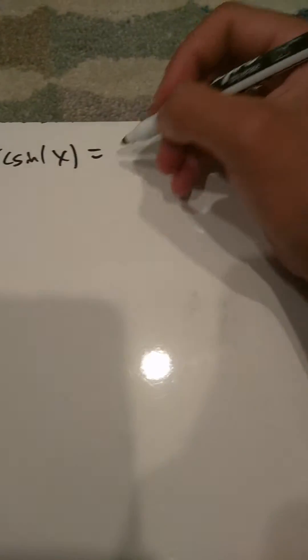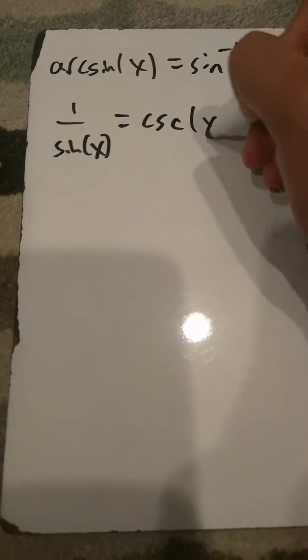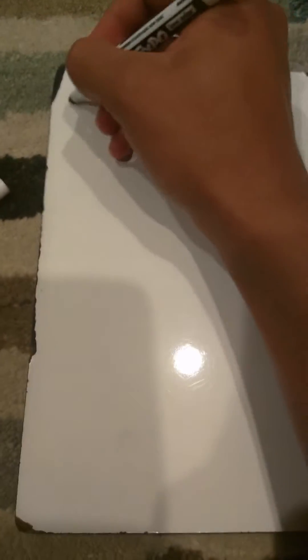Arcsine of x equals — here's another notation — sine to the negative one of x. But the thing is, sine to the negative one of x: this is a misconception. Some people think it's equal to one over sine x, but it actually doesn't equal one over sine x. It's the inverse sine. One over sine x equals cosecant.